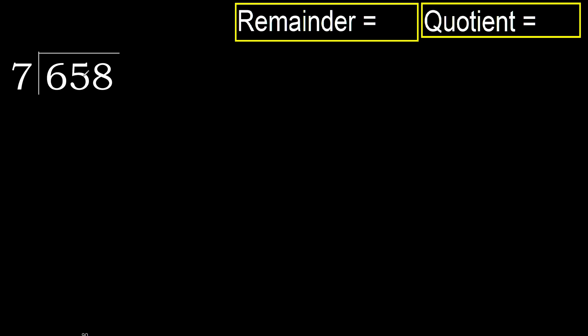658 divided by 7. 6 is less, therefore move to the next digit. 65 is not less, therefore we work with 65.